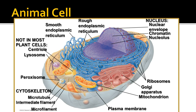Most plant cells don't have centrioles or lysosomes. Another organelle seen in both animal and plant cells is the peroxisome, involved in breaking down harmful compounds. Ribosomes are found both on the rough ER and in the cytoplasm. The cytoskeletal components — microtubules, intermediate filaments, and microfilaments — are involved in maintaining the structure of the cell.